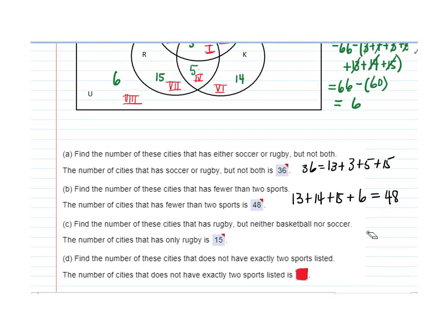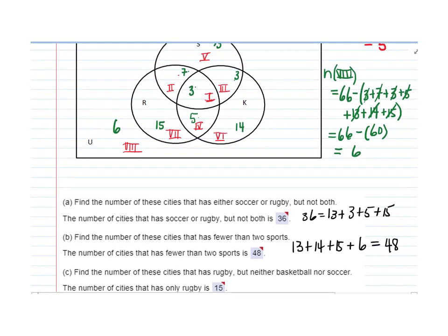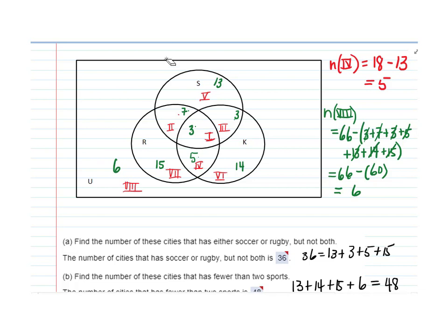Find the number of cities that does not have exactly two sports. Not exactly two would be either 0, 1, or 3, right? Not exactly two. Alright, so we know that the region out here, region 8, that has none.